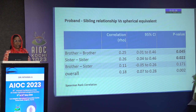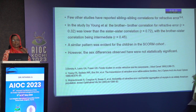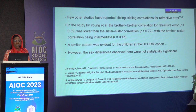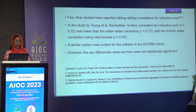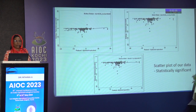When broken down by gender, same-gender pairs — brother-brother and sister-sister — showed statistically significant correlation, whereas brother-sister pairs did not. Other studies have also reported sibling-sibling correlation for refractive error. Young et al. found brother-brother correlation was lower than sister-sister correlation, a similar pattern seen in a Singapore-based study though not statistically significant. The scatterplot of the data shows positive inclination for brother-brother and sister-sister data.